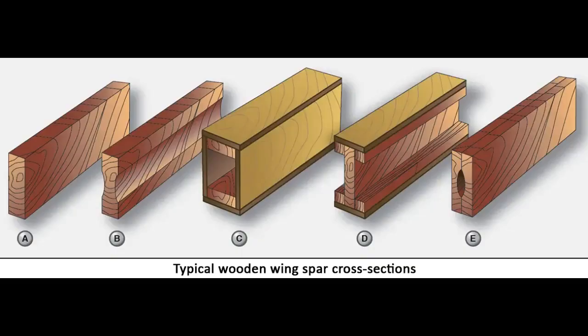Wooden spars can be generally classified into four different types by their cross-sectional configuration. They may be: solid, box-shaped, partly hollow, or in the form of an eye beam. Lamination of solid wood spars is often used to increase strength, and laminated wood can also be found in box-shaped spars. A spar may also have material removed to reduce weight while retaining the strength of a rectangular spar.